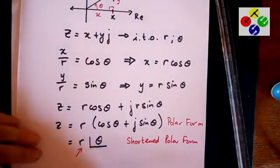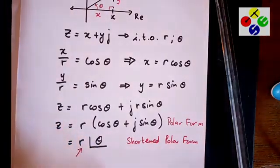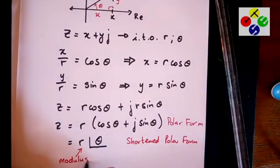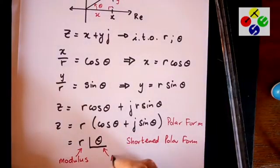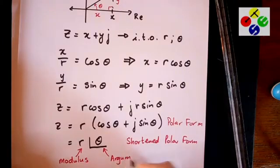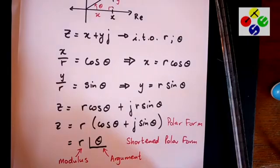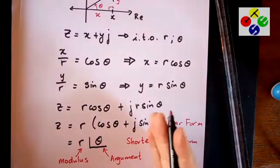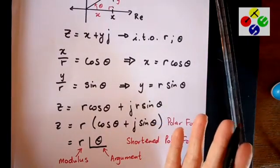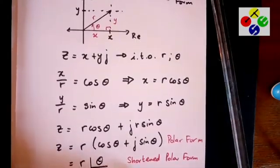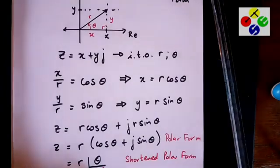And the R is called your modulus. That is called the modulus. And the theta is called the argument. You'll see on some websites they call it the mod-arg form, modulus argument form. So essentially when you convert between polar and rectangular form, you just go through this process each time.